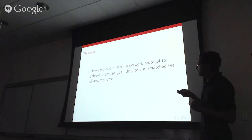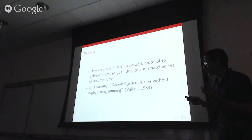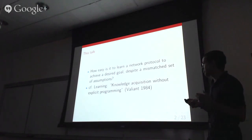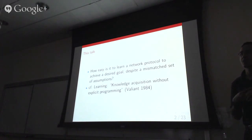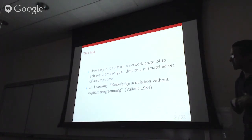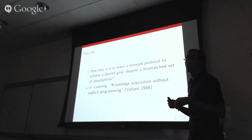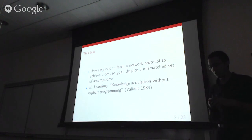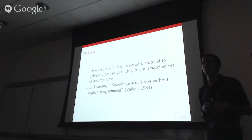I use the term 'learn' in a specific sense based on Valiant's 1984 paper, meaning knowledge acquisition without explicit programming. The explicit programming here means we want to restrict manual input into this learning procedure and automate it as far as possible, so that we don't constrain the network protocol by our preconceived notions of how the protocol should look.